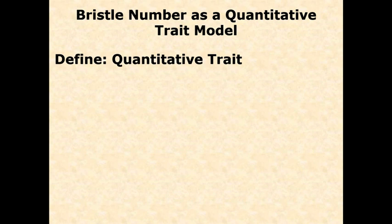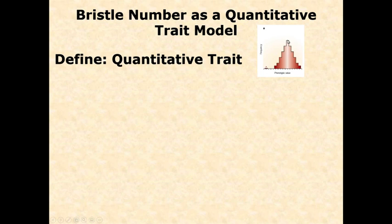What does that mean? With quantitative traits, we see something much more like a normal distribution rather than step-by-step discrete states. If we look at height in humans, it's definitely a quantitative trait. Most individuals cluster around the average, and then numbers drop off as you approach extremes like four feet tall or seven feet tall. That is a continuous trait.